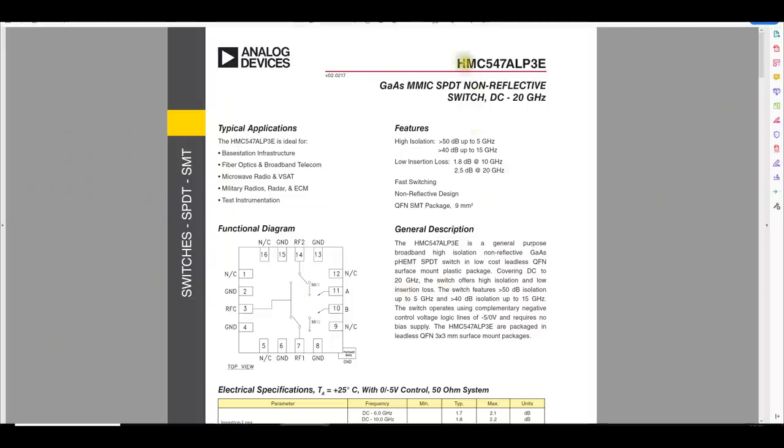Here is the switch that I had in mind to use. This is the HMC547A. This is a Hittite part now once analog devices purchased Hittite it's going to be within their portfolio and that's why it's labeled analog devices. Now this is a GaAs MMIC as to be expected so we would get very good linearity and very low loss and reasonably good isolation from this device which is exactly what we get. So we have a higher isolation more than 50 dB of isolation up to 5 gigahertz and that's more than 40 up to 15 gigahertz. So it's going to be a good device to use in this kind of application and in fact one of its typical applications is test instrumentation.